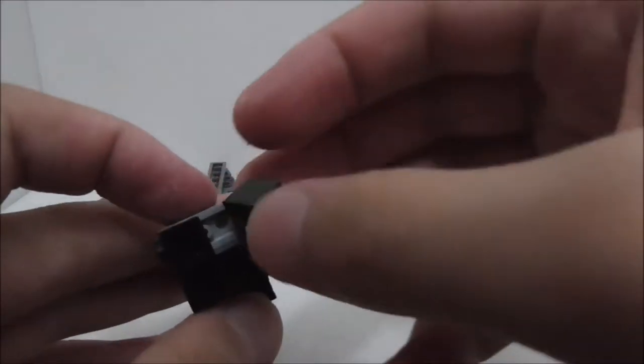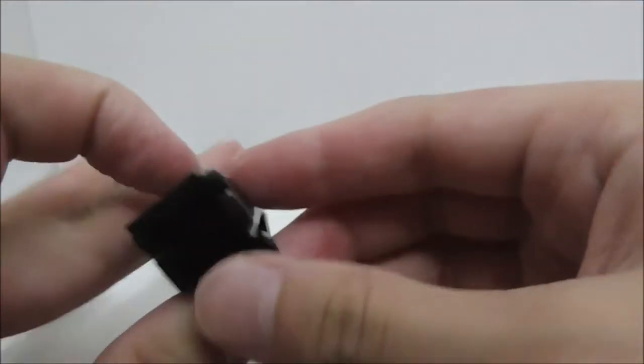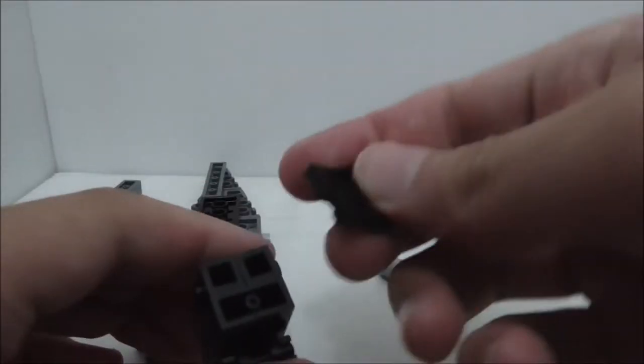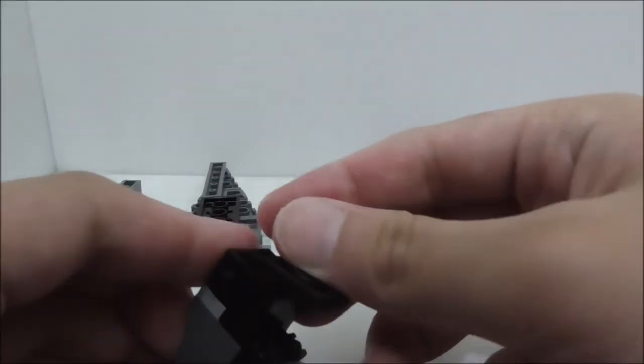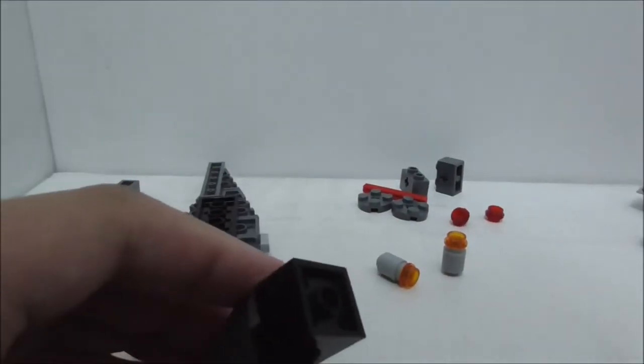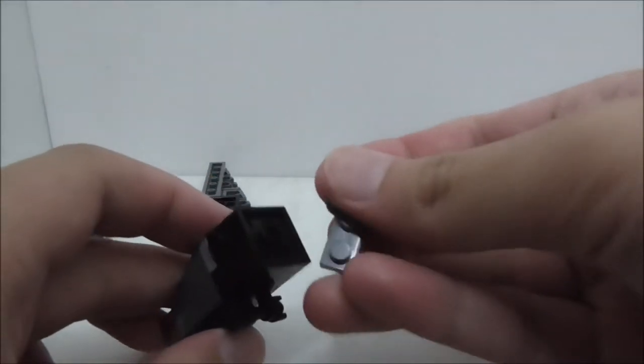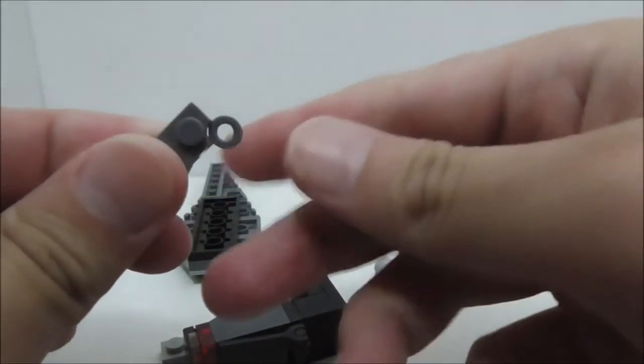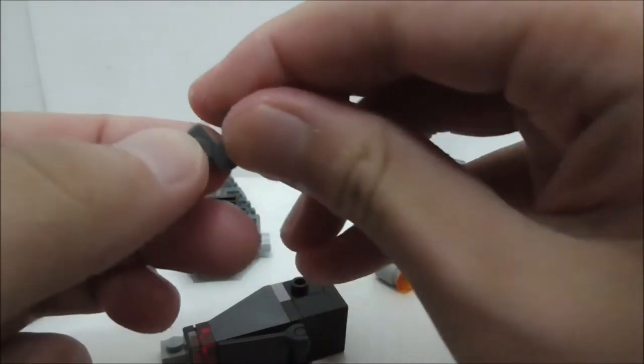You also have to put it on the other side. Make sure not to put it wrong though. You also have to stick this right here. You have to stick this 2x2 black at the back. Then you have to place two of your 1x2 plate pieces.